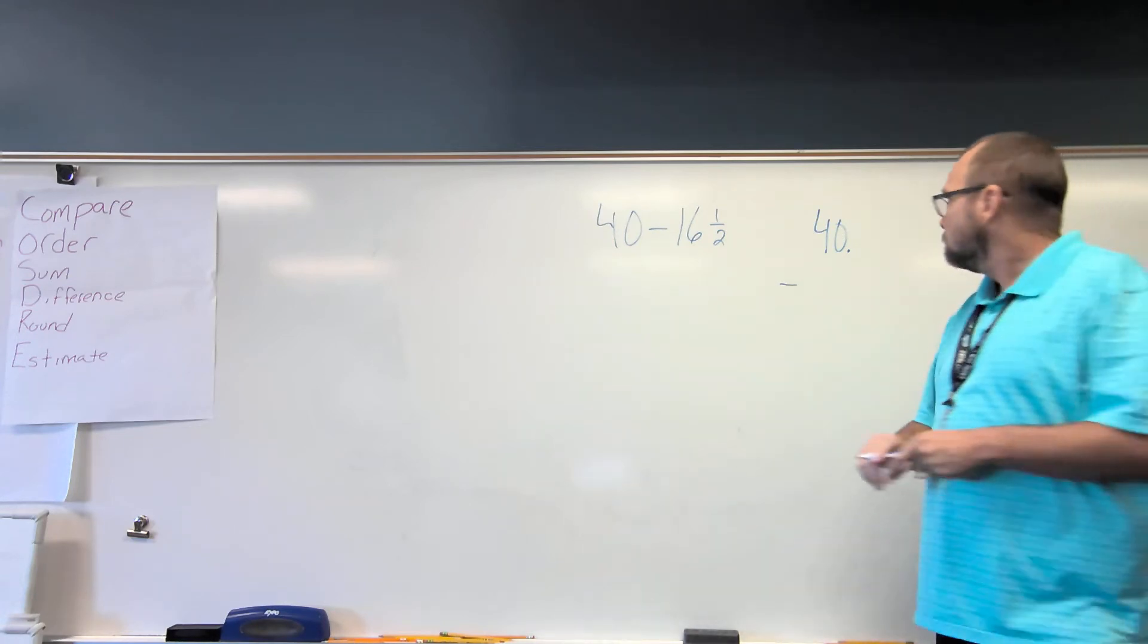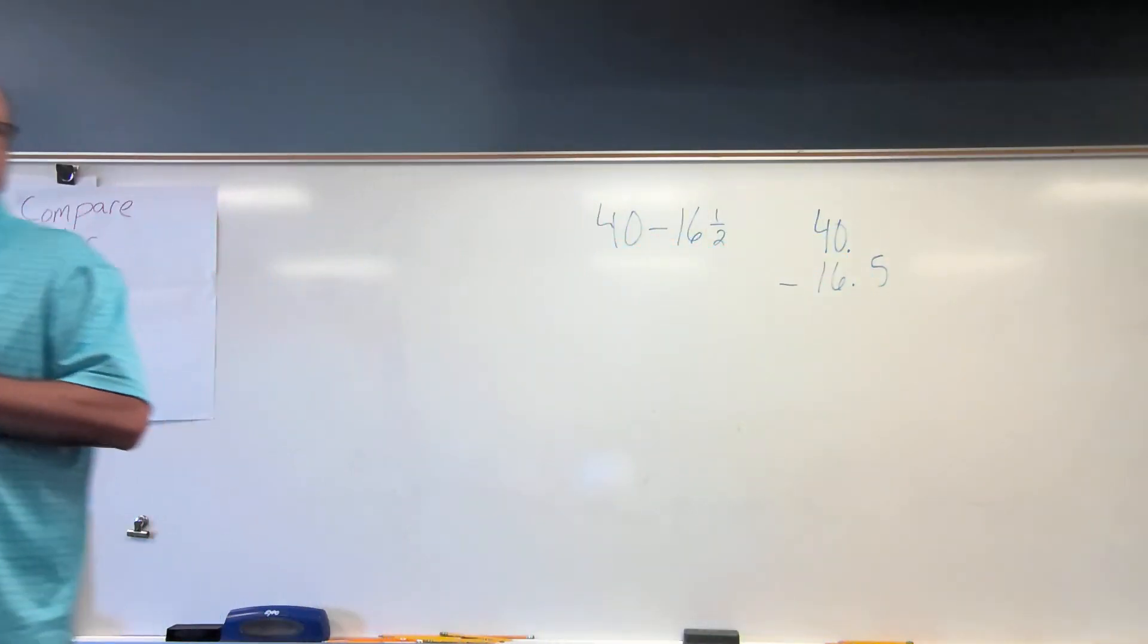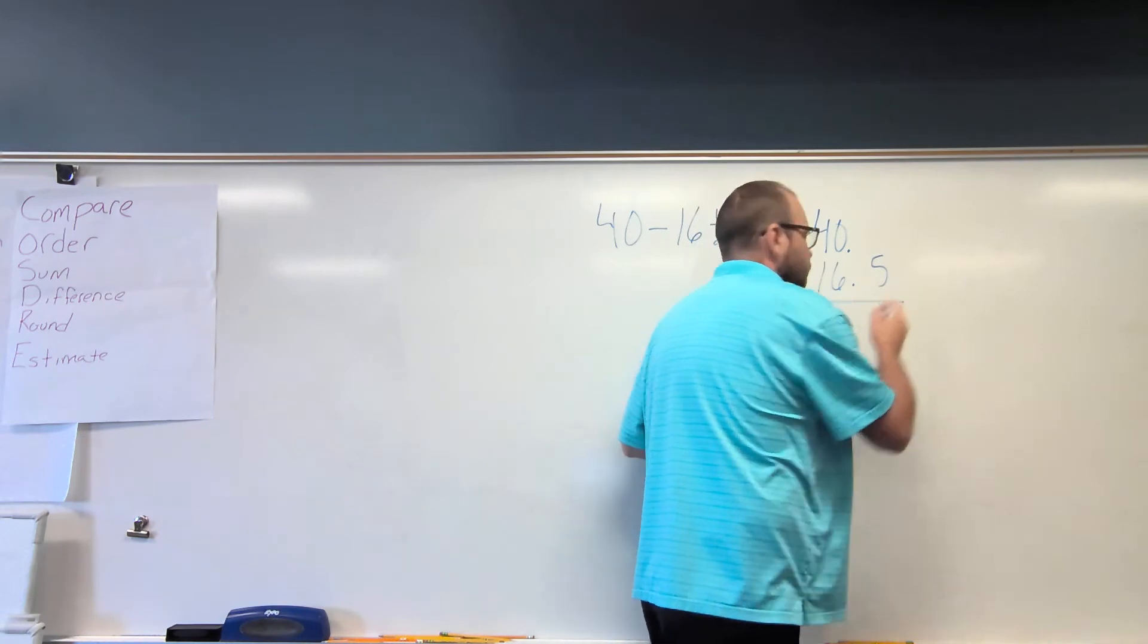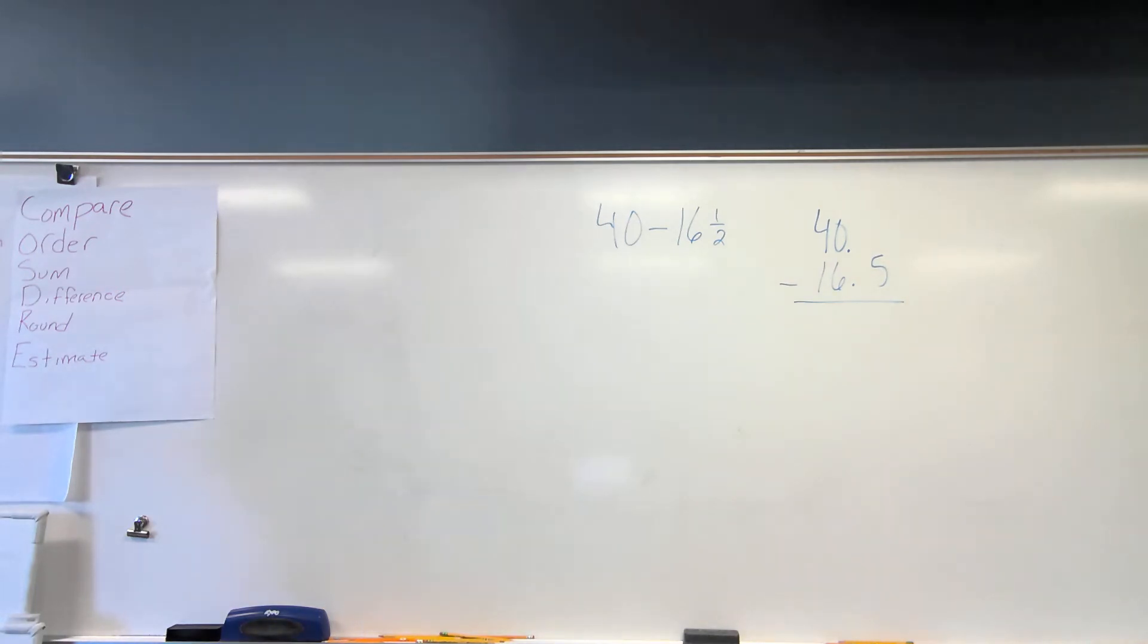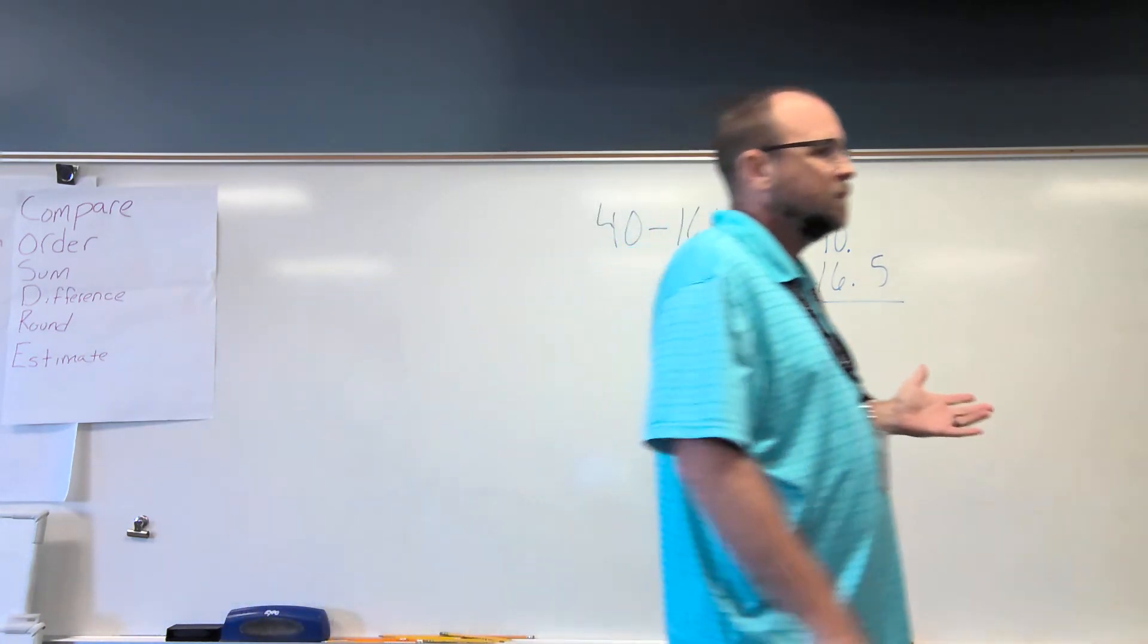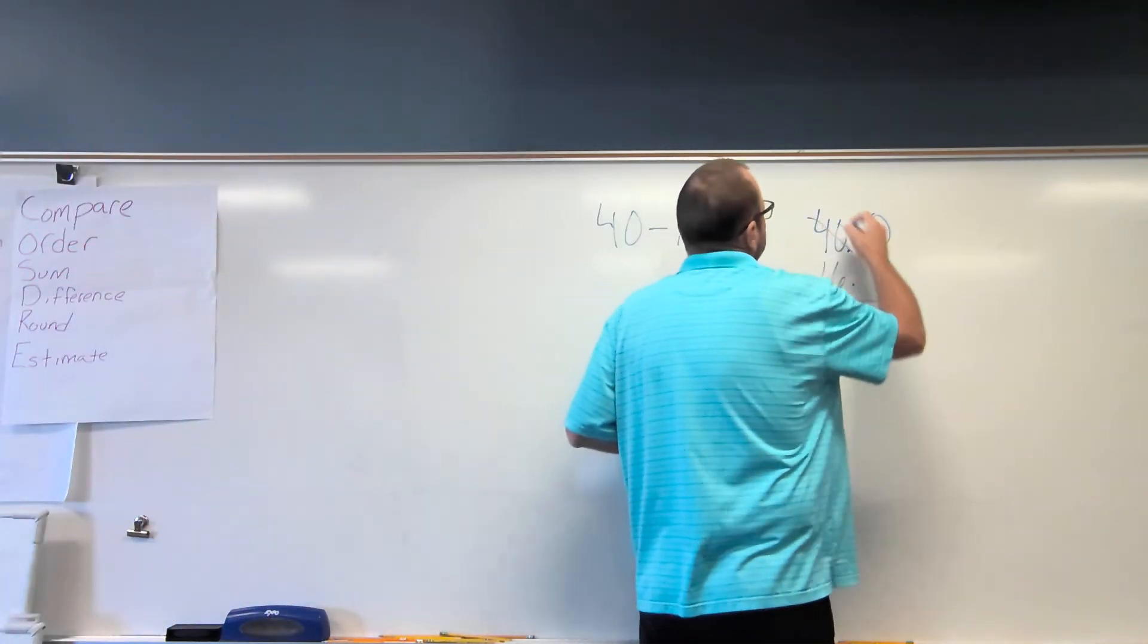So we've already said, when we add or subtract with decimals, we have to line the decimal points up. So now we have 40 minus 16 and 5 tenths. We could make it 15 hundredths if I want. Now you've done a lot of adding and subtracting decimals so far this year. You know you cannot take 5 from nothing. So I can't just bring that 5 down. I need to take from my whole number. I'm going to take 1 from my whole number. So instead of 40, I'm going to have 39.